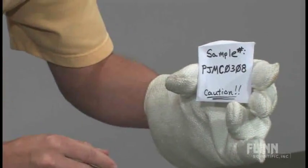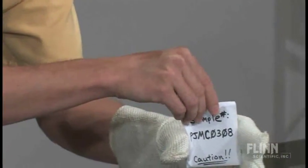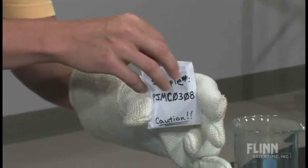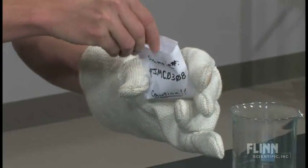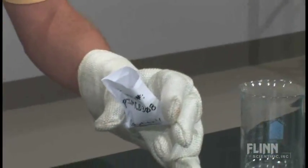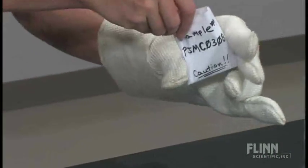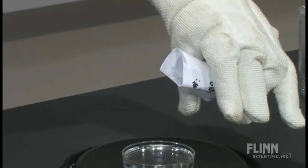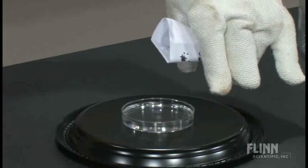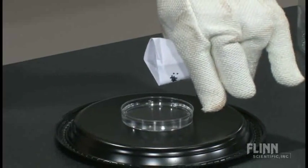Sample PJMC-0308 being put into a Petri dish. It has some water in it. I hope we're okay. It looks like a white crystal, but I don't know. We'll give it a little shot here and see.